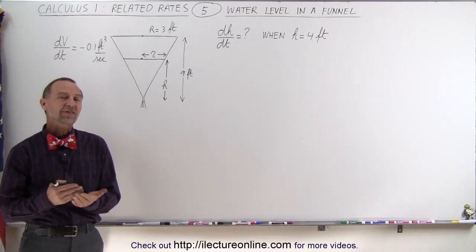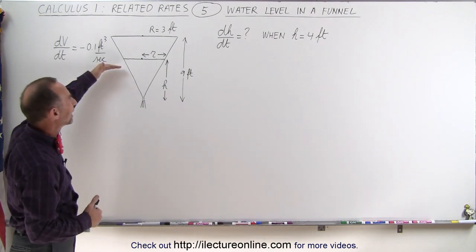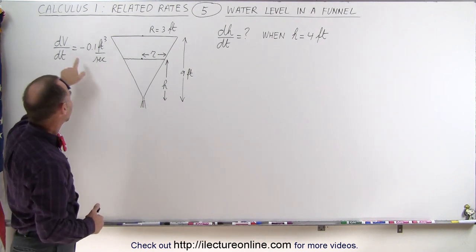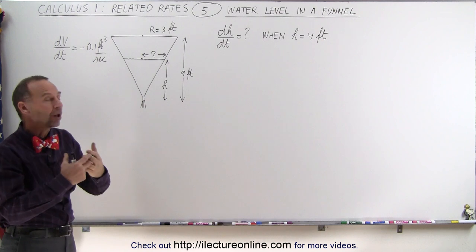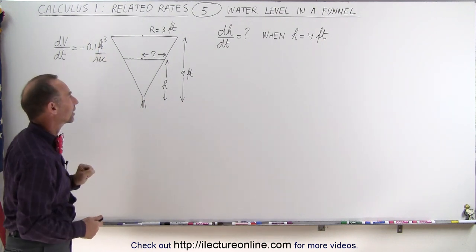Welcome to ElectronLine. In this example we're trying to find the rate at which the water level drops inside this funnel given that the volume of water in the funnel decreases at a rate of 0.1 cubic feet per second.